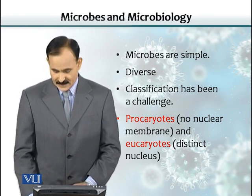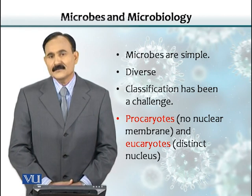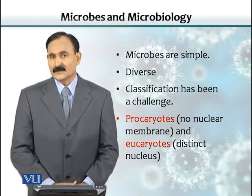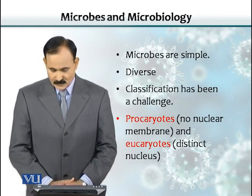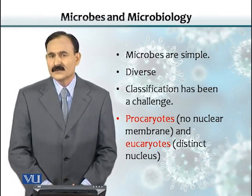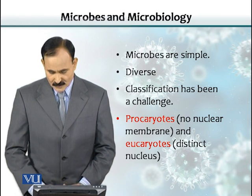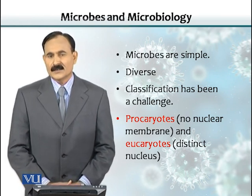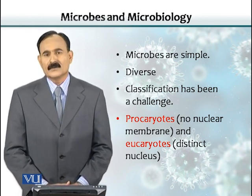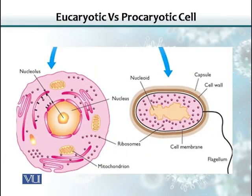There is a lot of diversity among microbes, and because of that diversity, classifying them is really a challenge for the microbiologist. Generally, all microbes could be grouped either into prokaryotes or into eukaryotes. Prokaryotes don't have a defined nucleus, whereas eukaryotes have a distinct nucleus. As seen in this picture, a large cell belongs to a eukaryote, whereas the smaller one is a prokaryotic cell. The nucleus is very well defined in the eukaryotic cell, but there is no such division in the prokaryotic cell.